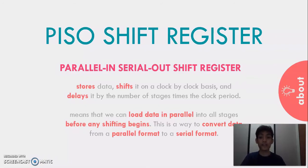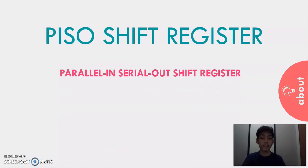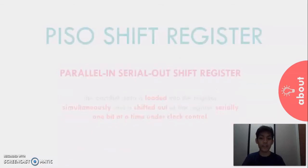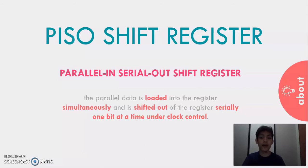Moreover, this shift register stores data, shifts it on a clock-by-clock basis, and delays it by the number of stages times the clock period. In addition, in this type of register, the parallel data is loaded into the register simultaneously and is shifted out the register serially one bit at a time under clock control.